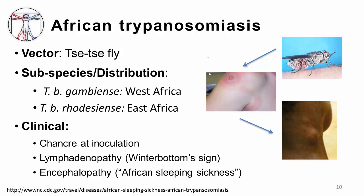Moving on to African trypanosomiasis — unlike malaria acquired by mosquitoes or babesiosis acquired by ticks, Trypanosoma brucii infection is acquired by the bite of the tsetse fly. There are two subspecies: T. brucii gambiense in West Africa and T. brucii rhodesiense in East Africa. Following the bite, patients develop a chancre — a painful ulcer at the site of inoculation — with surrounding redness, swelling, and lymphatic tracking to the draining lymph node, as seen in the images.